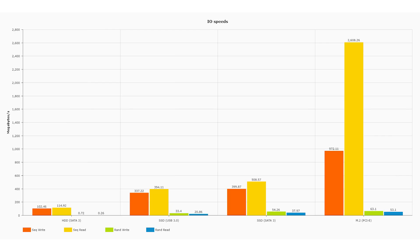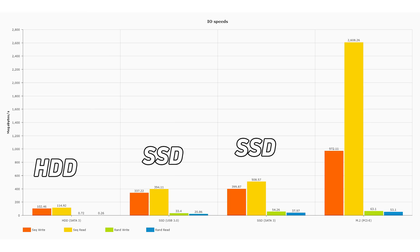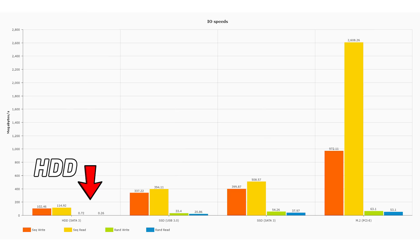The final set of devices are traditional PC and laptop storage: a mechanical hard drive over SATA 3, an SSD over USB 3, an SSD over SATA 3, and an M.2 module over PCI Express. The M.2 module has the highest sequential read and write speeds. However, when you get down to random read and random write, there isn't a huge difference between an SSD over SATA 3 and an M.2 module — because here we're pushing the limits of the physical medium, not the interface.